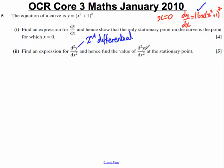Lastly, it wants us to find the value of this at the stationary point. At the stationary point, we've seen in part 1 that x = 0. So when we found an expression for d²y/dx², we're going to substitute x = 0 into it to find the value of d²y/dx² at the stationary point.